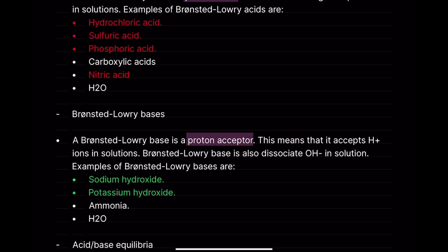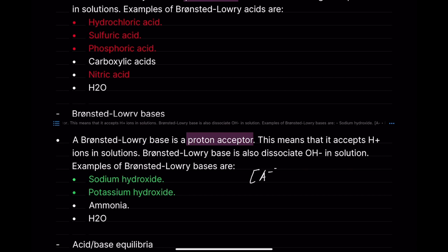We usually refer to the ion as A−, because it could be any type of halide or similar ion. Usually you associate it with OH−, but it could be an A− ion. If you have a salt, there could be a reason why it's not represented by OH−. But for the majority of cases, Bronsted-Lowry bases dissociate OH− in solution.